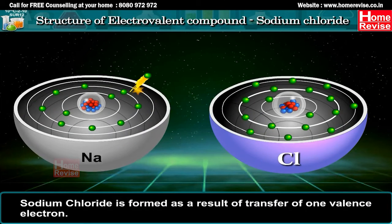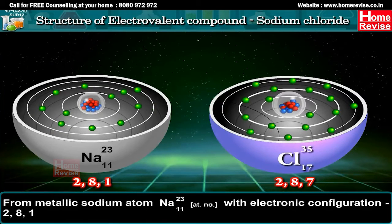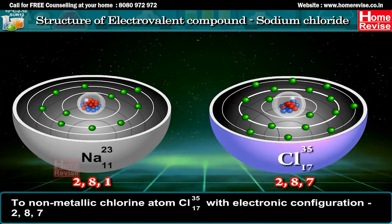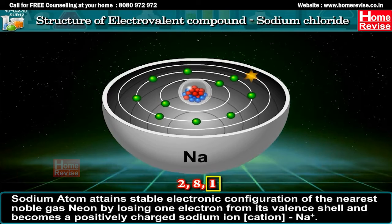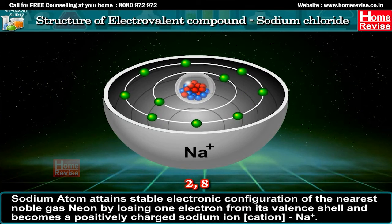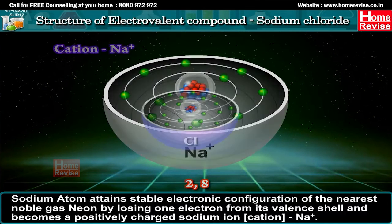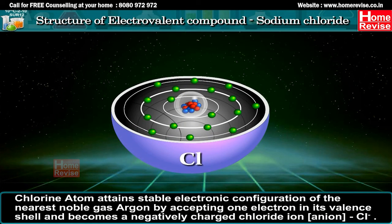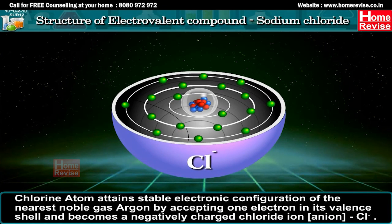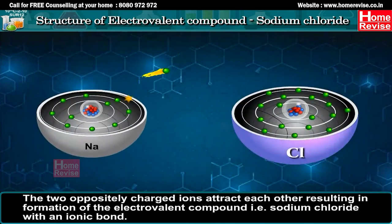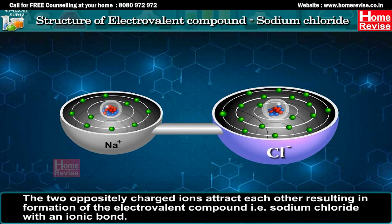NaCl is formed as a result of transfer of 1 valence electron from metallic sodium atom Na (atomic number 11, electronic configuration 2, 8, 1) to non-metallic chlorine atom Cl (atomic number 17, electronic configuration 2, 8, 7). Sodium atom attains the stable electronic configuration of the nearest noble gas Neon by losing 1 electron and becomes a positively charged sodium ion Na+. Chlorine accepts the electron and becomes a negatively charged chloride ion Cl-. The two oppositely charged ions attract each other, resulting in formation of the electrovalent compound sodium chloride with an ionic bond.